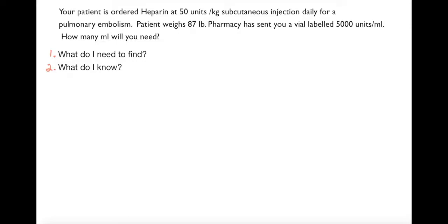All right, so we have our practice questions here. Let's start with number one: a patient is ordered Heparin 50 units per kilogram for a pulmonary embolism. My patient weighs 87 pounds and I have a vial available of 5,000 units per ml. What am I looking to find? I'm looking to find how many mls I will need. Second thing is what do I know? Well, I know I have 50 units per kilogram and that's my desired dose, but I have a patient that only weighs 87 pounds.